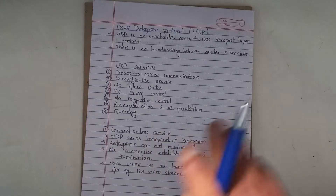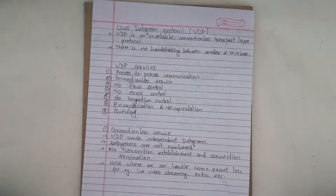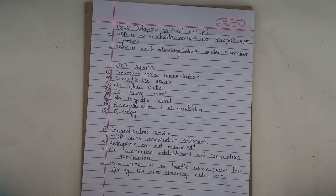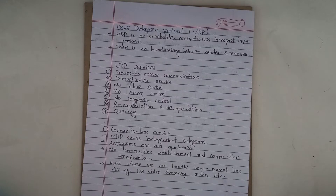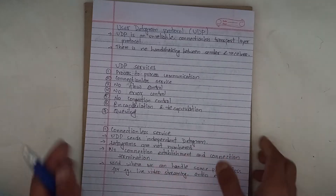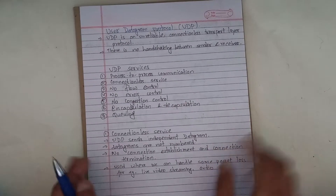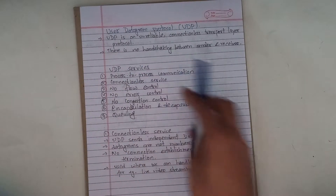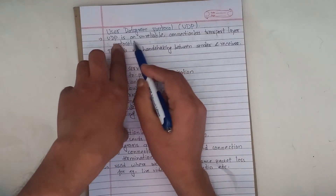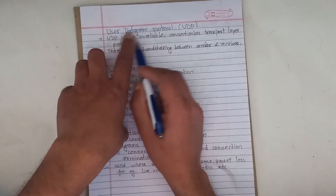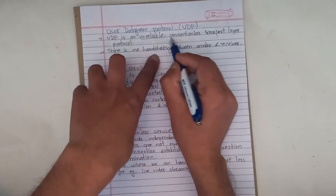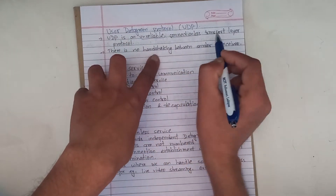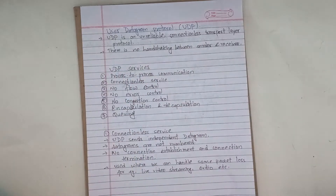So, what do we say in TCP? TCP is a connection-oriented protocol — it is guaranteed. Now, what do we say in user datagram protocol? UDP is an unreliable connectionless transport layer protocol.